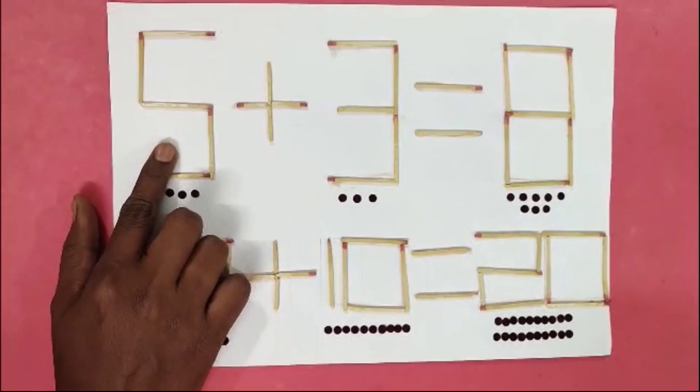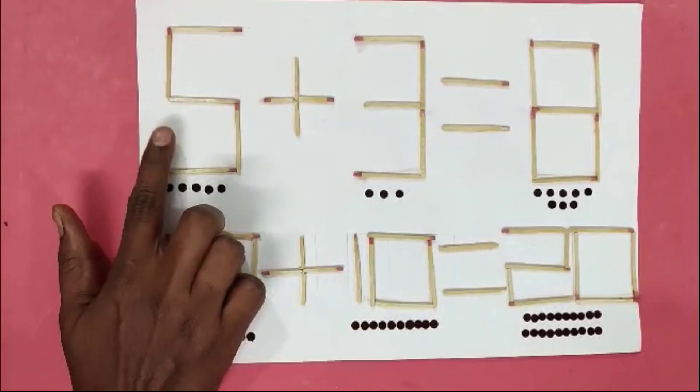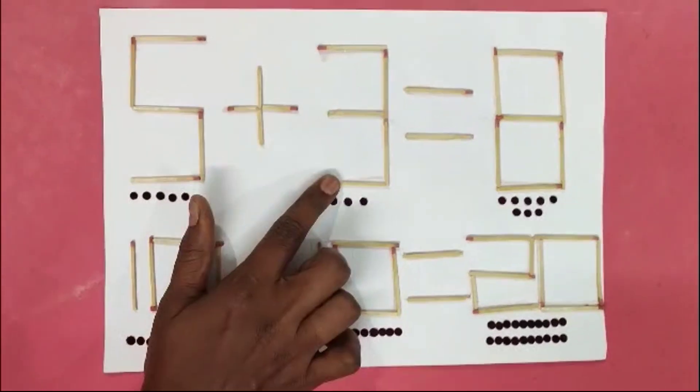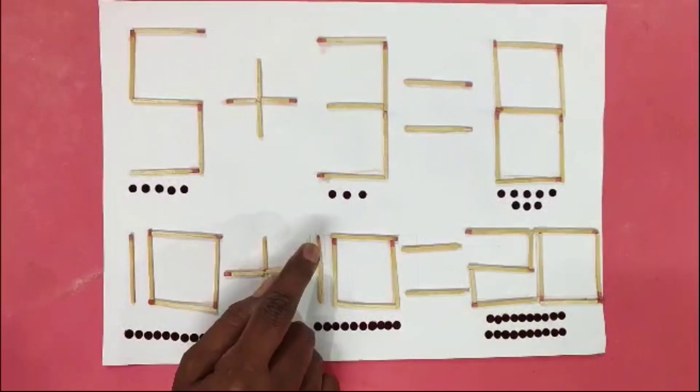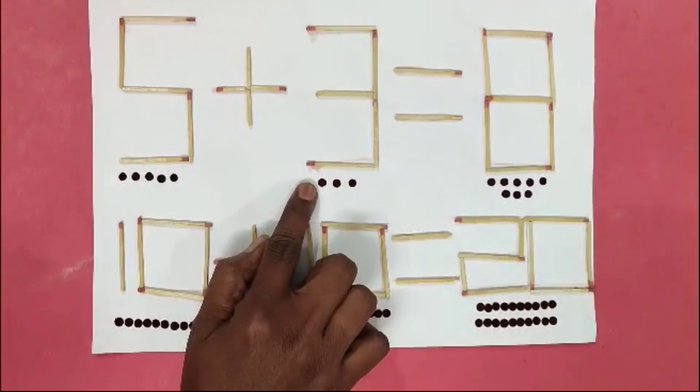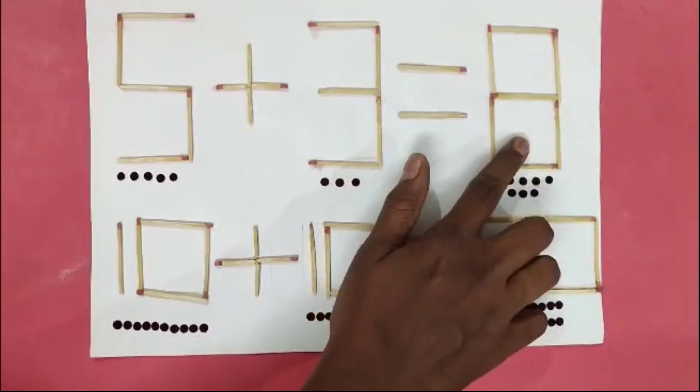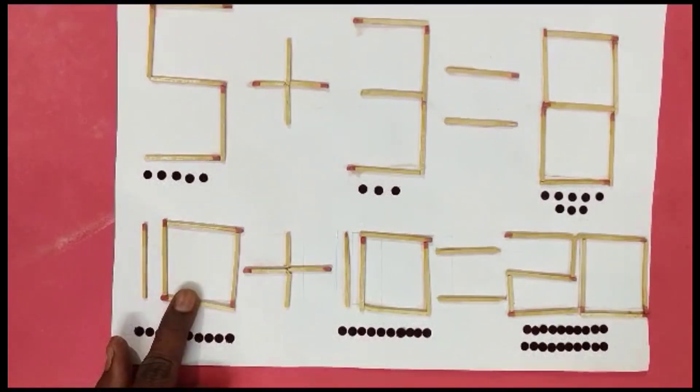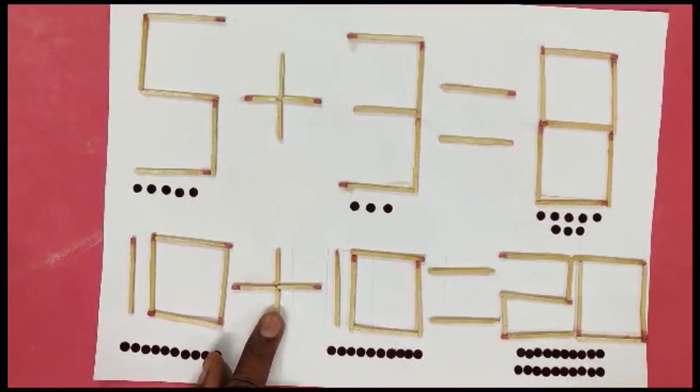5 plus 5. 5 in mind, 3 in fingers. After 5: 6, 7, 8, 9, 10. Answer? 10.